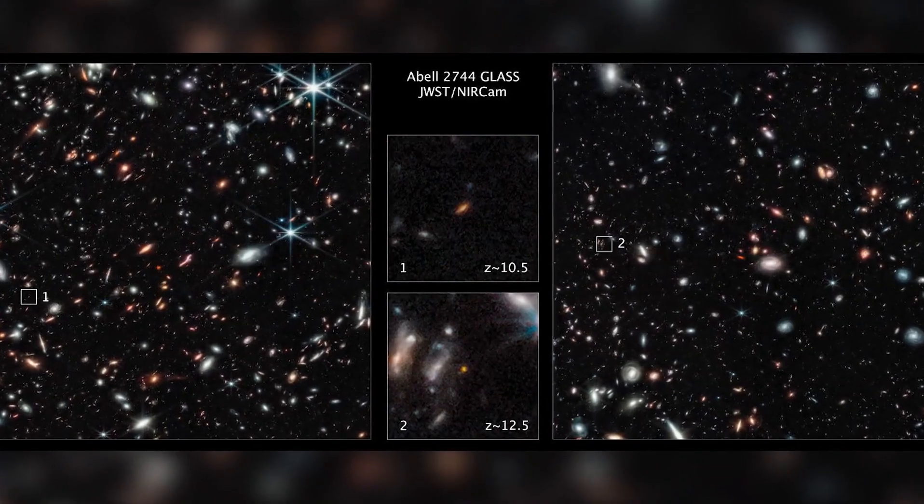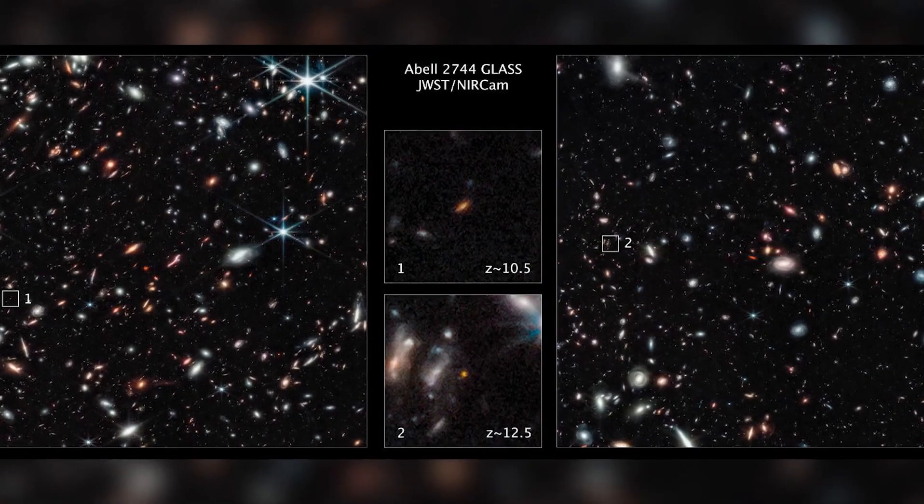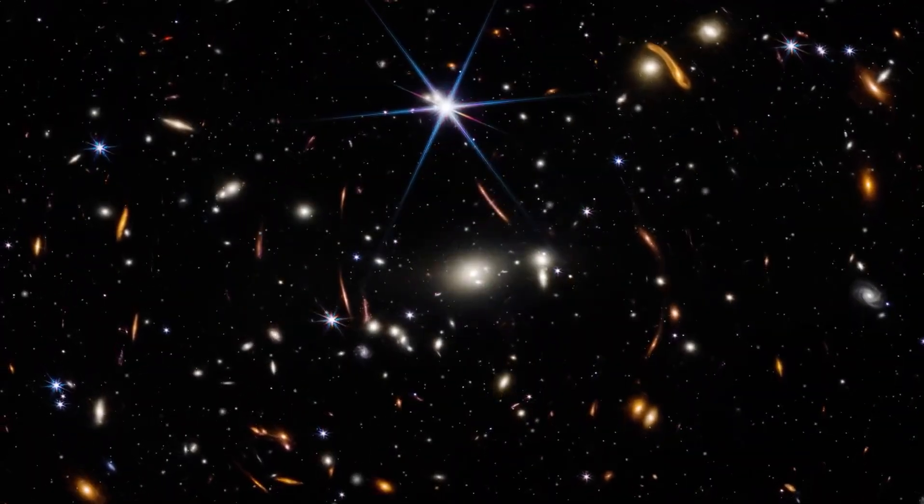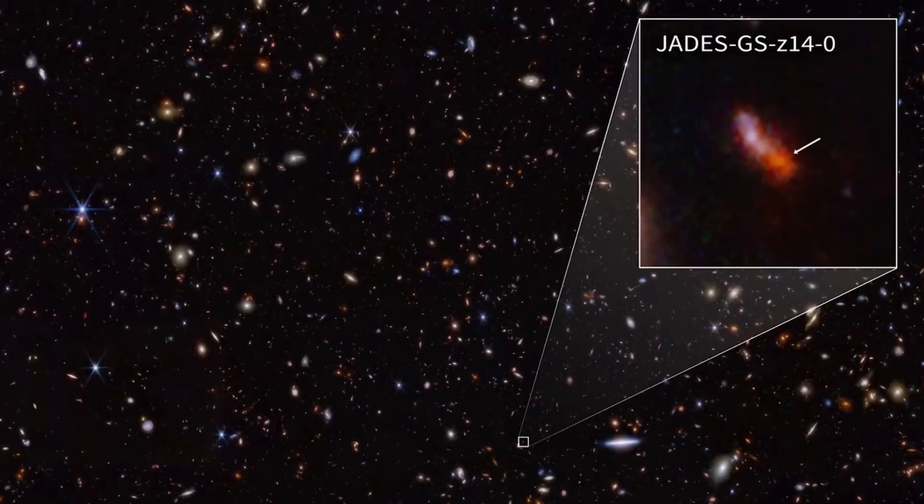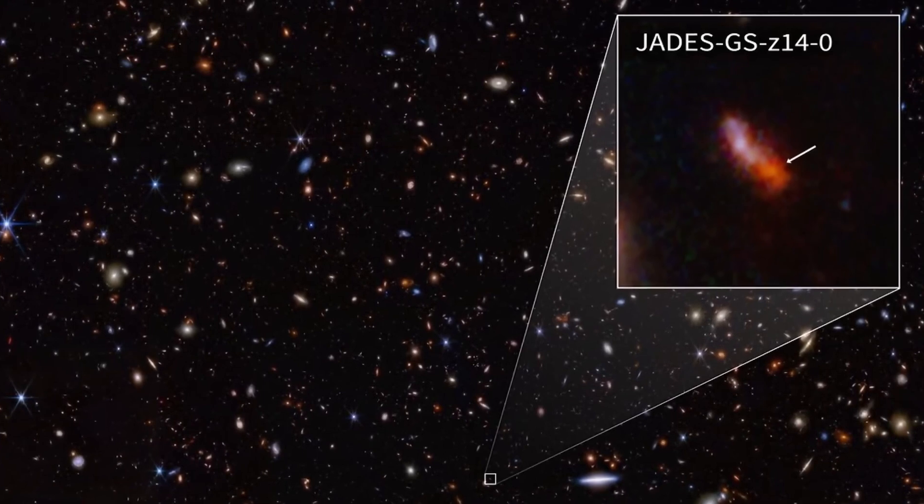The hits keep on coming with NASA's James Webb Space Telescope. According to the latest update, the telescope has just discovered not one but two of the earliest and most distant galaxies ever seen, continuing to break the records it previously set.